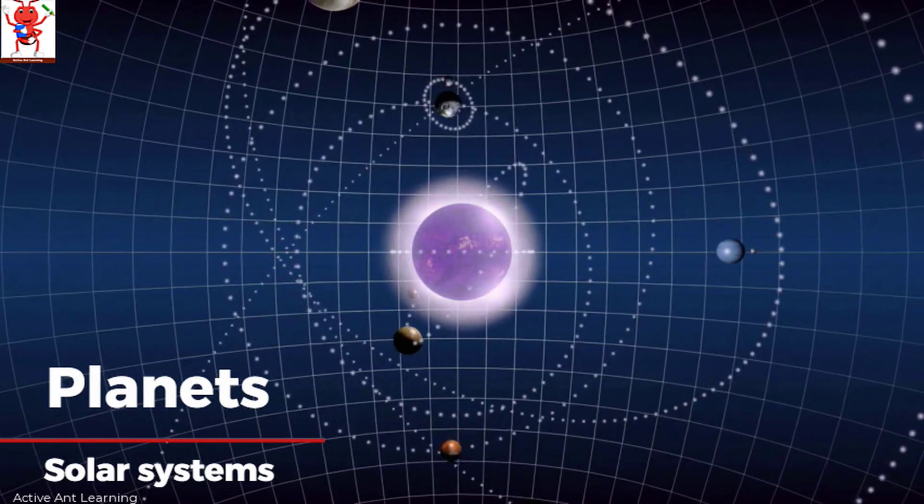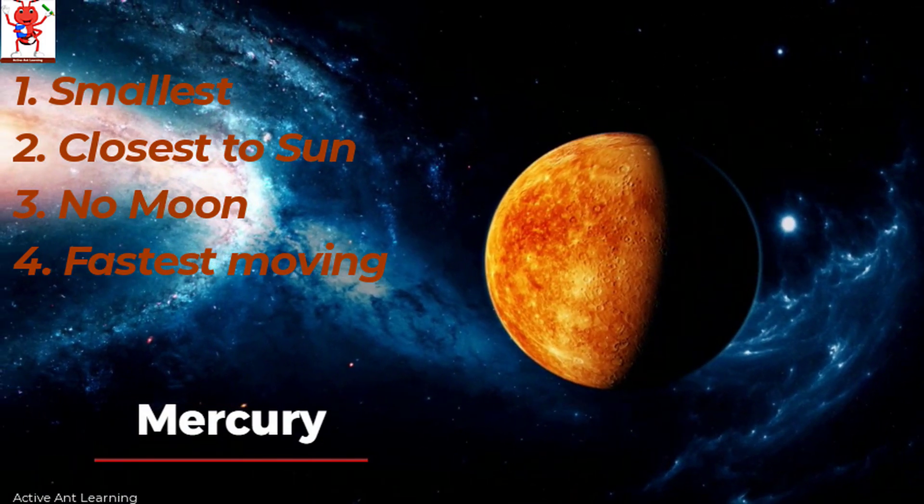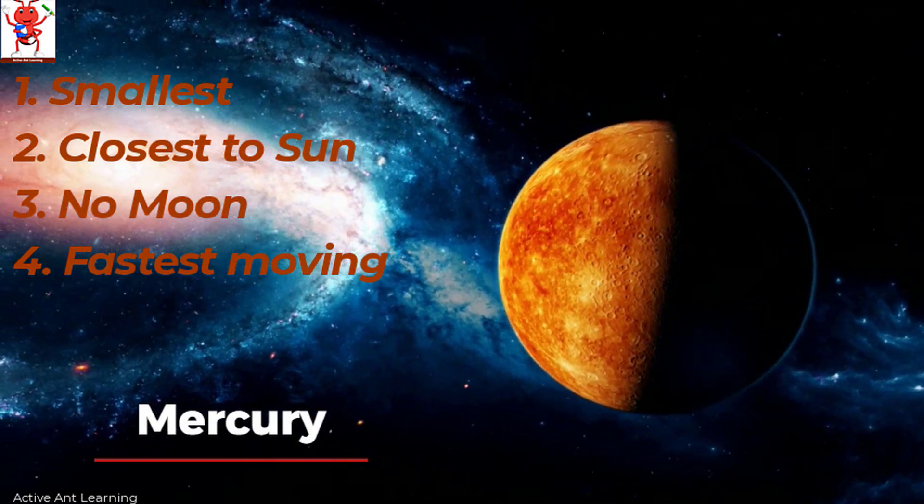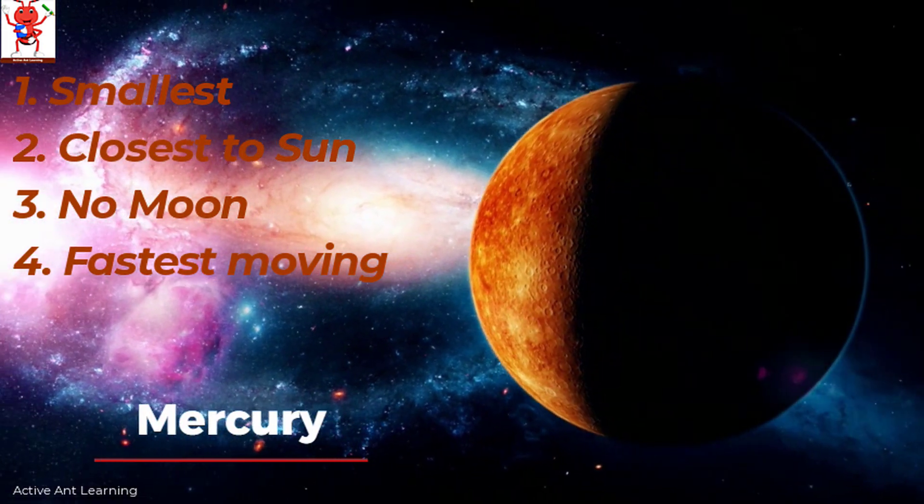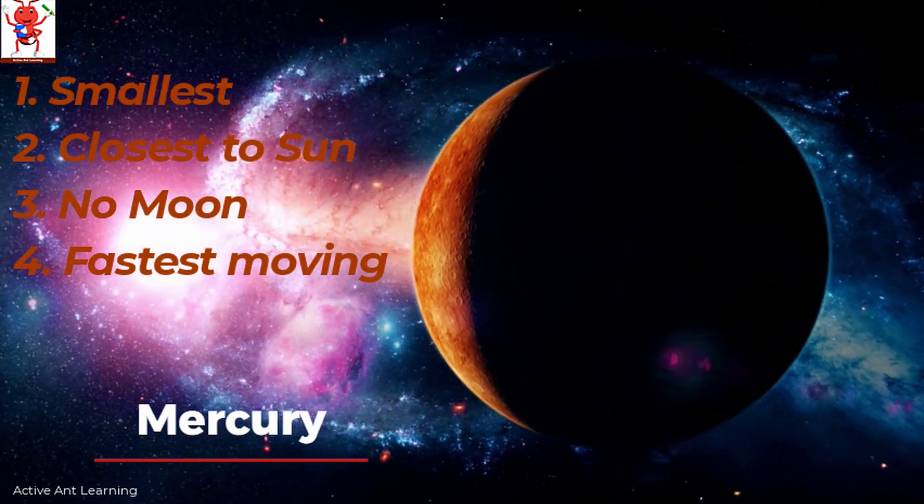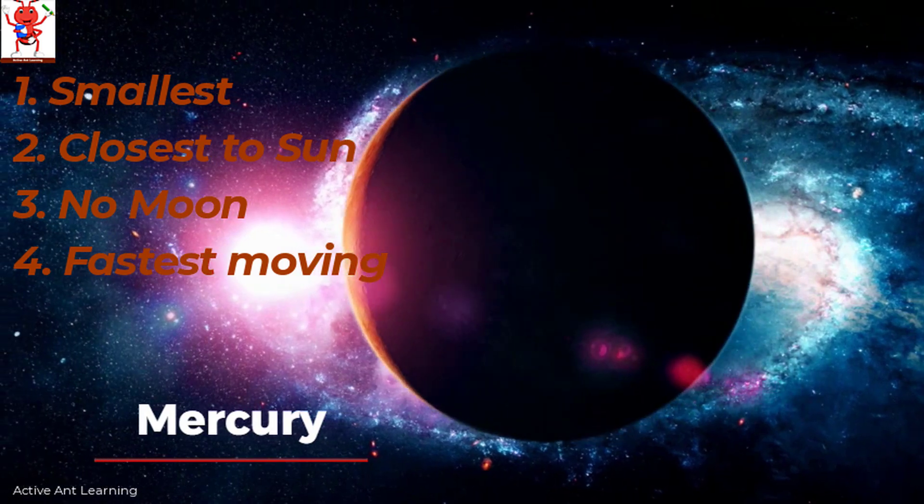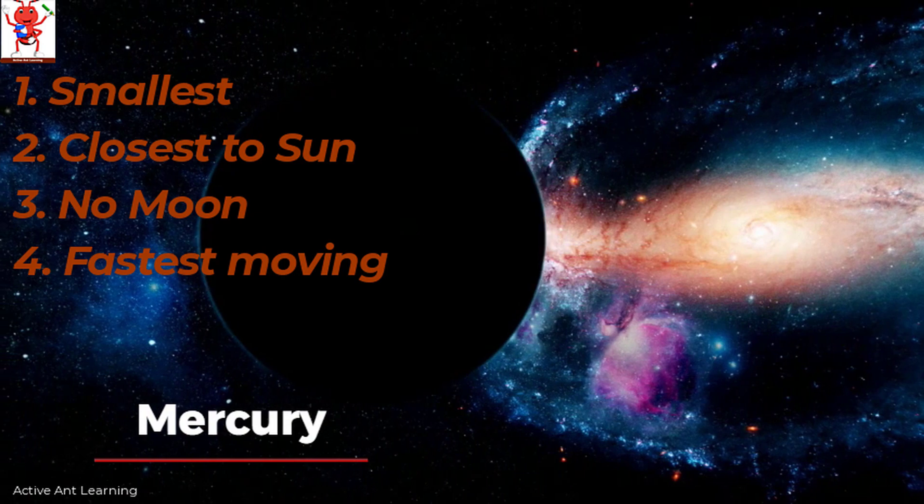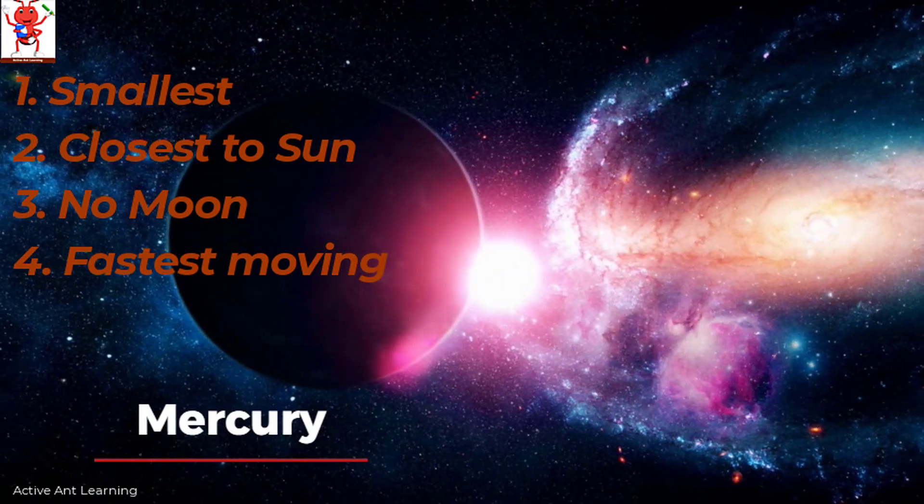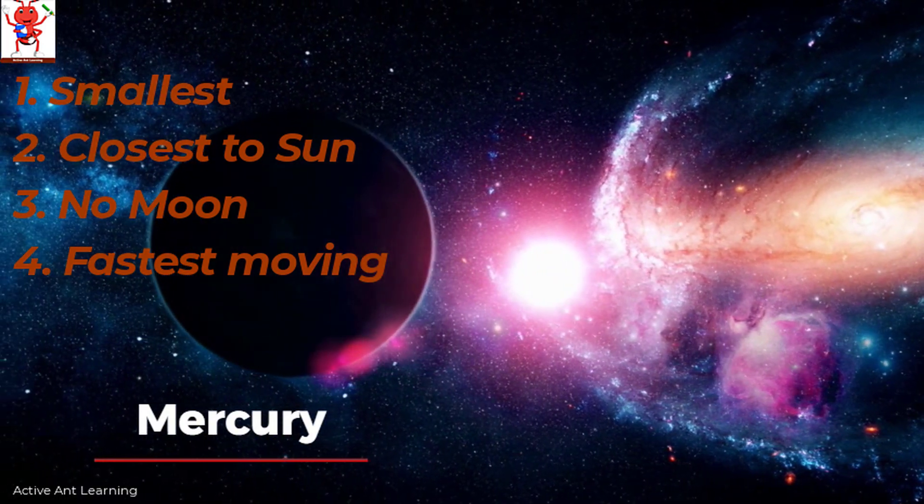So let's start. Friends the first planet from the sun is Mercury. It is the smallest planet in the solar system and closest planet to the sun. What else do you know about Mercury Anvi? Mercury has no moons and it's the fastest moving planet. Good job Anvi.